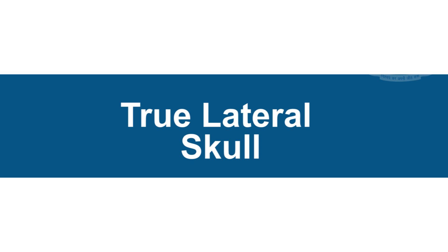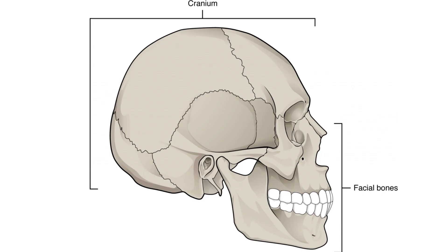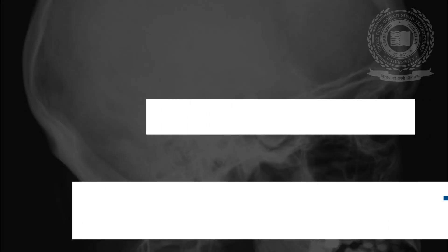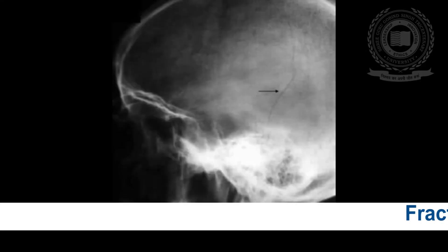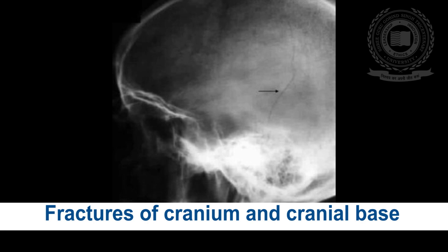The first radiographic projection we will discuss is the true lateral skull. As the name suggests, this focuses on the lateral aspect of the skull. The lateral skull radiograph is effective to diagnose fractures of the cranium or cranial base — the arrow mark here marks the fracture line running in the skull.